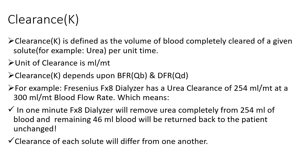For example, imagine we have an FX-rated dialyzer with a urea clearance of 254 ml per minute at a blood flow rate of 300 ml per minute, as per the brochure. This means the dialyzer can remove all urea from 254 ml of blood, but the remaining 46 ml will not be cleared of any urea, because our dialyzer's urea clearance is only 254 ml per minute while blood flow rate is 300 ml per minute.